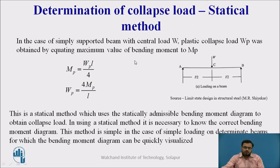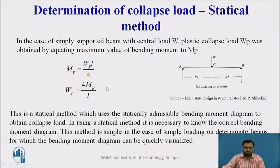Now we determine the collapse load using two methods. The first is the statical method. Taking a simply supported beam subjected to a point load W, the collapse load is Wp. The plastic moment is obtained by equating the maximum bending moment to Mp, giving Mp = Wp × L / 4, and rearranging: Wp = 4Mp / L. This method uses a statically admissible bending moment diagram and is simple for determinate beams where the BMD can be quickly visualized.